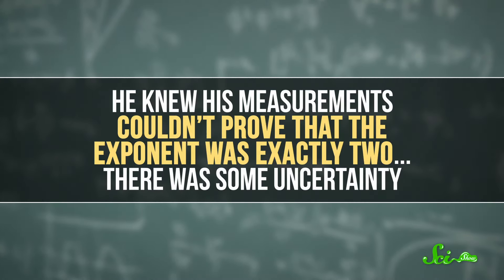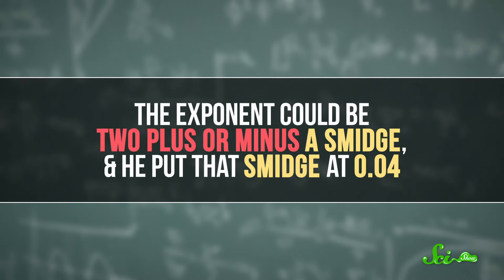In fact, Coulomb himself was already thinking about it. He knew his measurements couldn't prove that the exponent was exactly 2. There was some uncertainty. The exponent could be 2, plus or minus a smidge, and he put that smidge at 0.04.